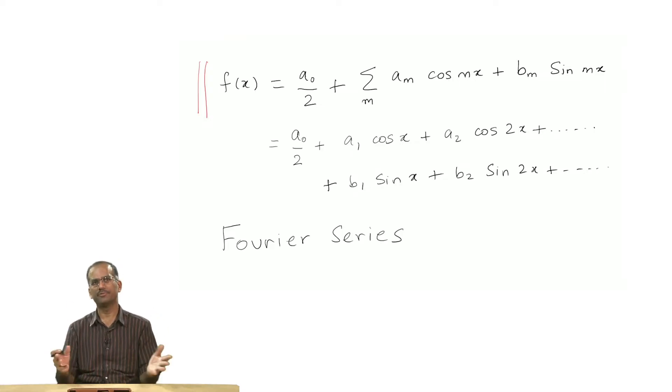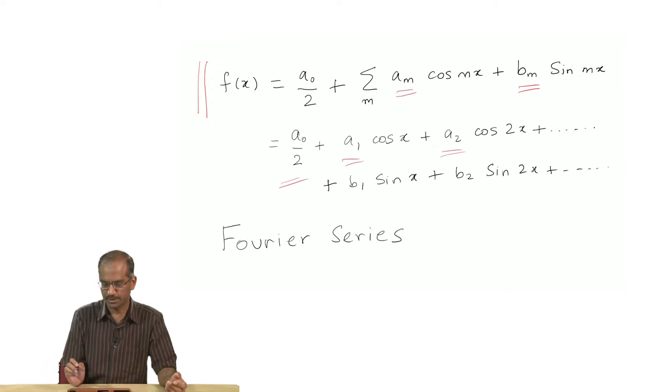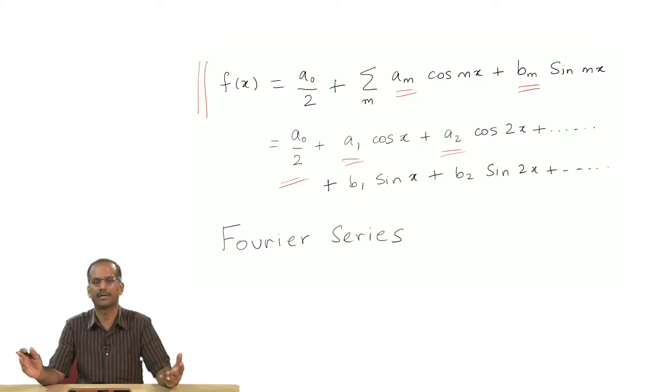For a particular problem, if your average is not very important for your purposes you could always set it to 0, but nevertheless you should keep in mind that there could be instances where the average would be important. AMs and BMs can be written in terms of an integral.